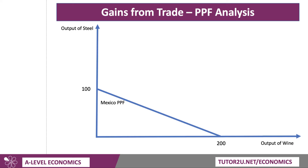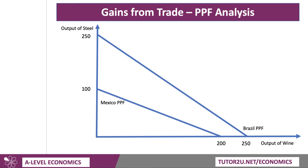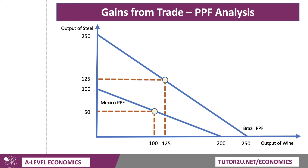The key for Mexico is they have to give up two units of wine for one unit of steel — that's their internal opportunity cost. The PPF is drawn as a straight line because of the assumption of constant returns. Brazil has the absolute advantage: they can produce 250 units of steel or 250 units of wine, so their opportunity cost is one for one, whereas for Mexico it's two for one. Pre-specialization, both countries are at the midpoint of their PPF — Mexico at 50 steel and 100 wine, Brazil at 125 and 125.